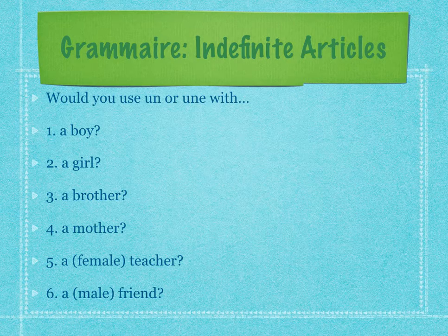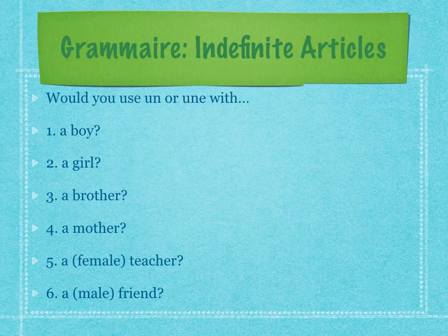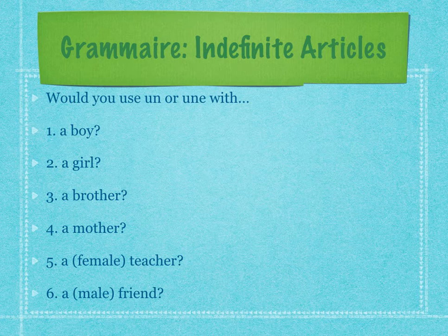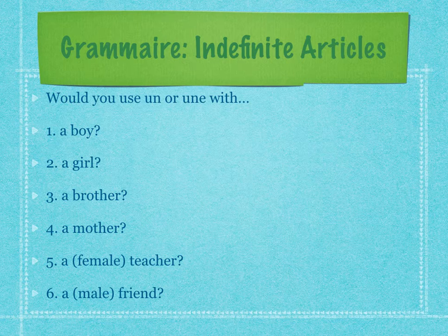So if you're talking about a boy, you should use un. If you're talking about a girl, you should use une. We can do this with anything. If you're talking about someone's brother, we say un, because a brother by definition has to be a boy. If you're talking about their mother, you use une, because a mother has to be a girl. If we're talking about a female teacher like Mrs. Brenner, we use une, because she's a girl. But if you're talking about your best guy friend, you call him un copain or un ami, because he's a guy.